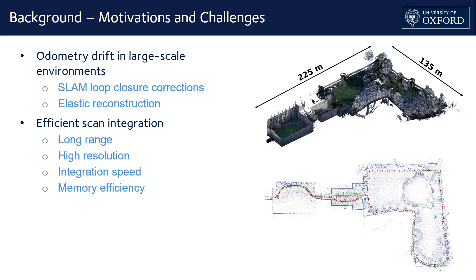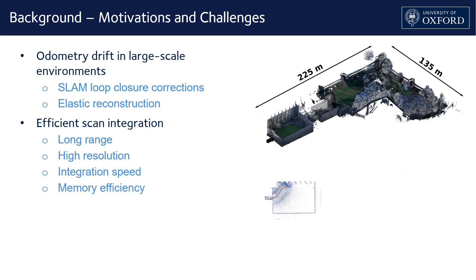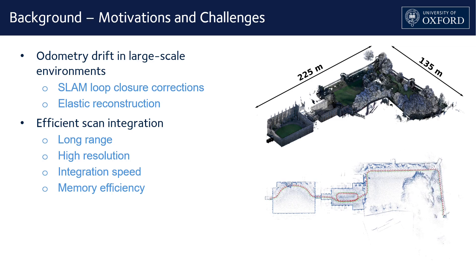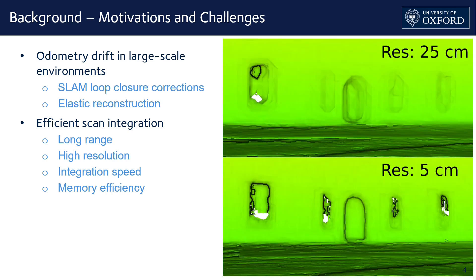First, the accumulation of some degree of odometry error is unavoidable during large-scale long-term exploration. In SLAM systems, we use loop closure to correct this error, and point cloud maps in LiDAR-based SLAM systems can be easily updated accordingly. However, reconstructions like mesh or volumetric maps are usually rigid. Hence, we need elasticity in the reconstruction for global consistency. Another challenge is to achieve a good balance between the resolution and scale of the reconstruction and the speed and memory efficiency of the system.